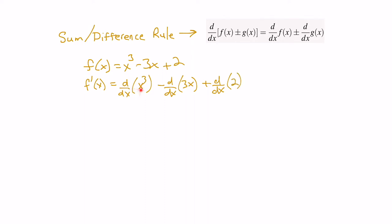Now we can apply the power rule to each of these. The derivative of x cubed is 3x squared. The derivative of 3x is minus 3. And the derivative of the constant 2 is 0. There's also something called the constant rule, which means any constant has a derivative of 0. You can think of it this way: 2 really means 2x to the 0, so if we apply the power rule, 2 times the exponent 0 gives us 0. Cleaning this up, the derivative is 3x squared minus 3.